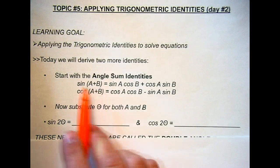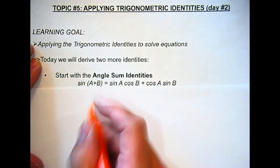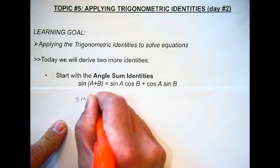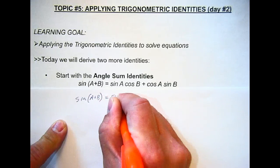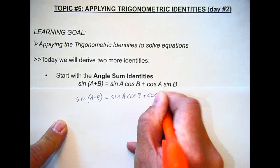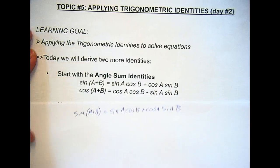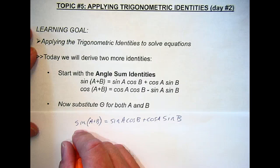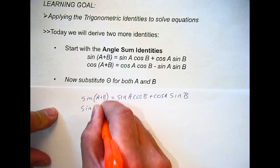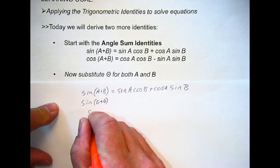The assumption that you've started this, you have sine A plus B. I'm going to start with the angle sum identity for sine. So sine of A plus B is equal to sine A cos B plus cos A sine B. Okay, so if I take that and I plug in theta for both A and B, so now I have sine of theta plus theta,